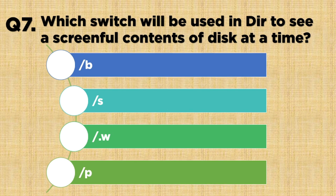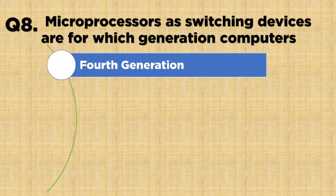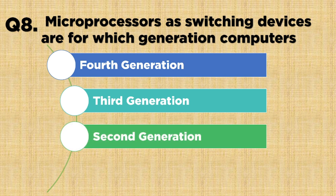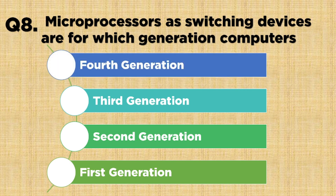Question number 8: Microprocessors are switching devices for which generation computers? Option A: 4th generation, Option B: 3rd generation, Option C: 2nd generation, Option D: 1st generation. The correct answer is 4th generation.